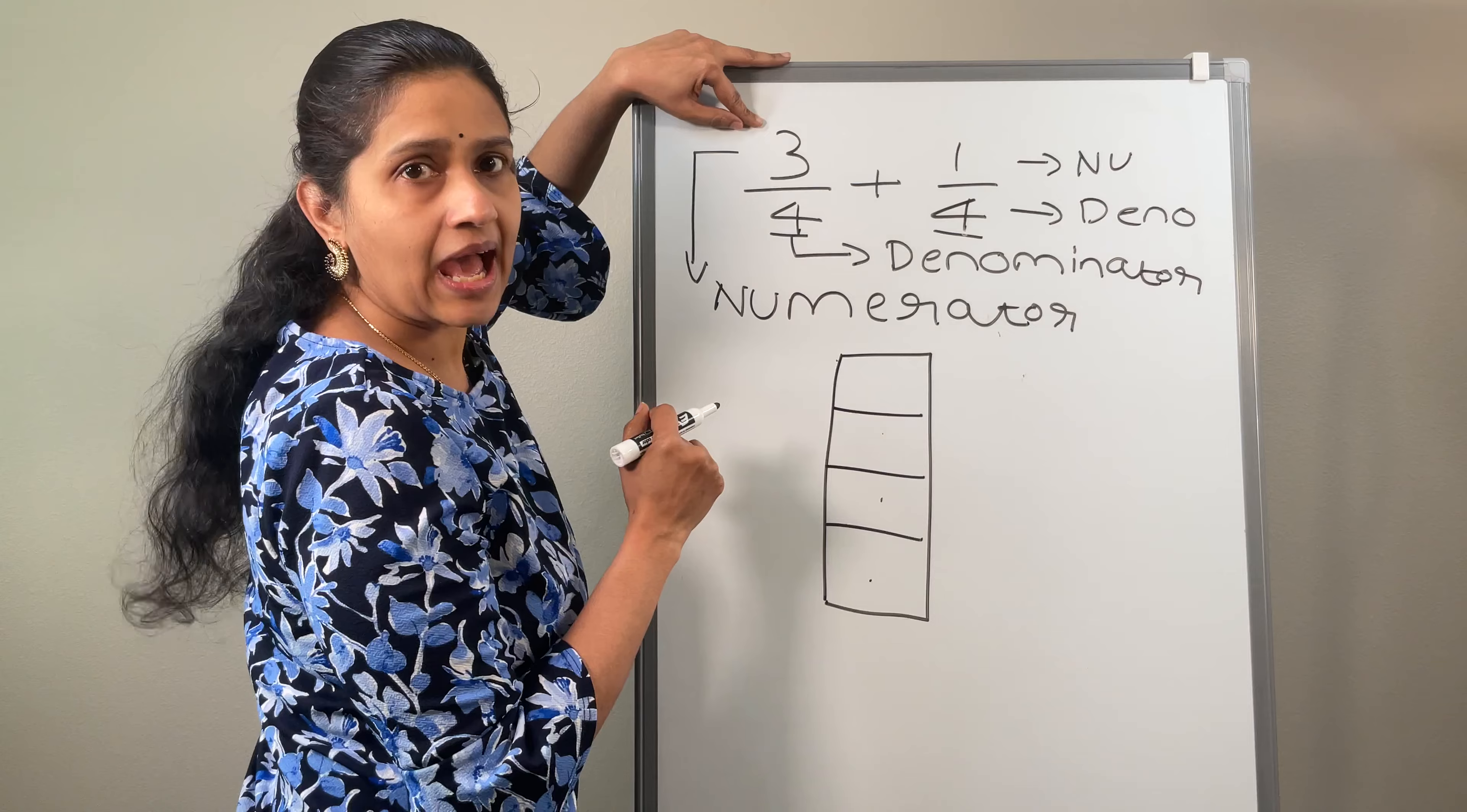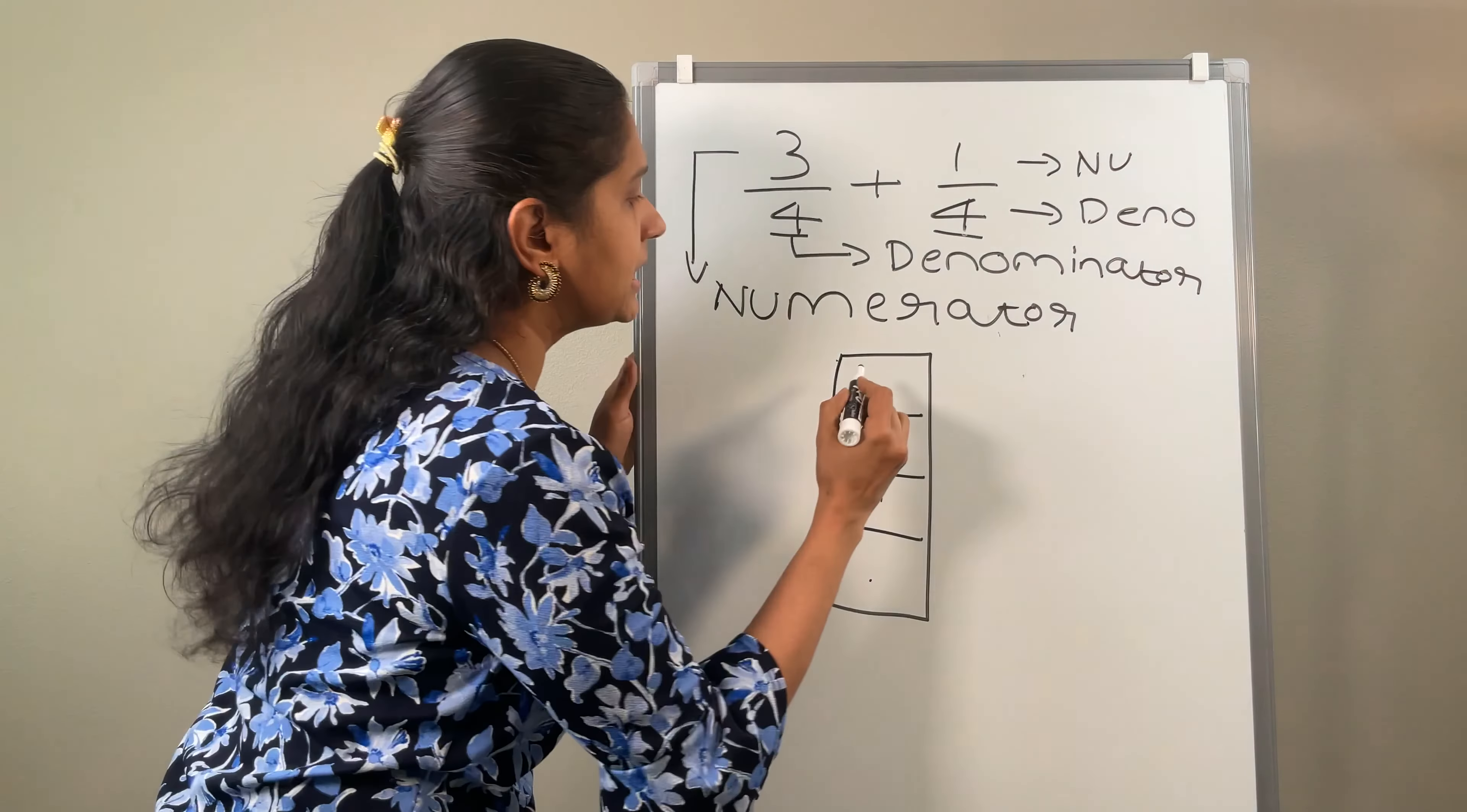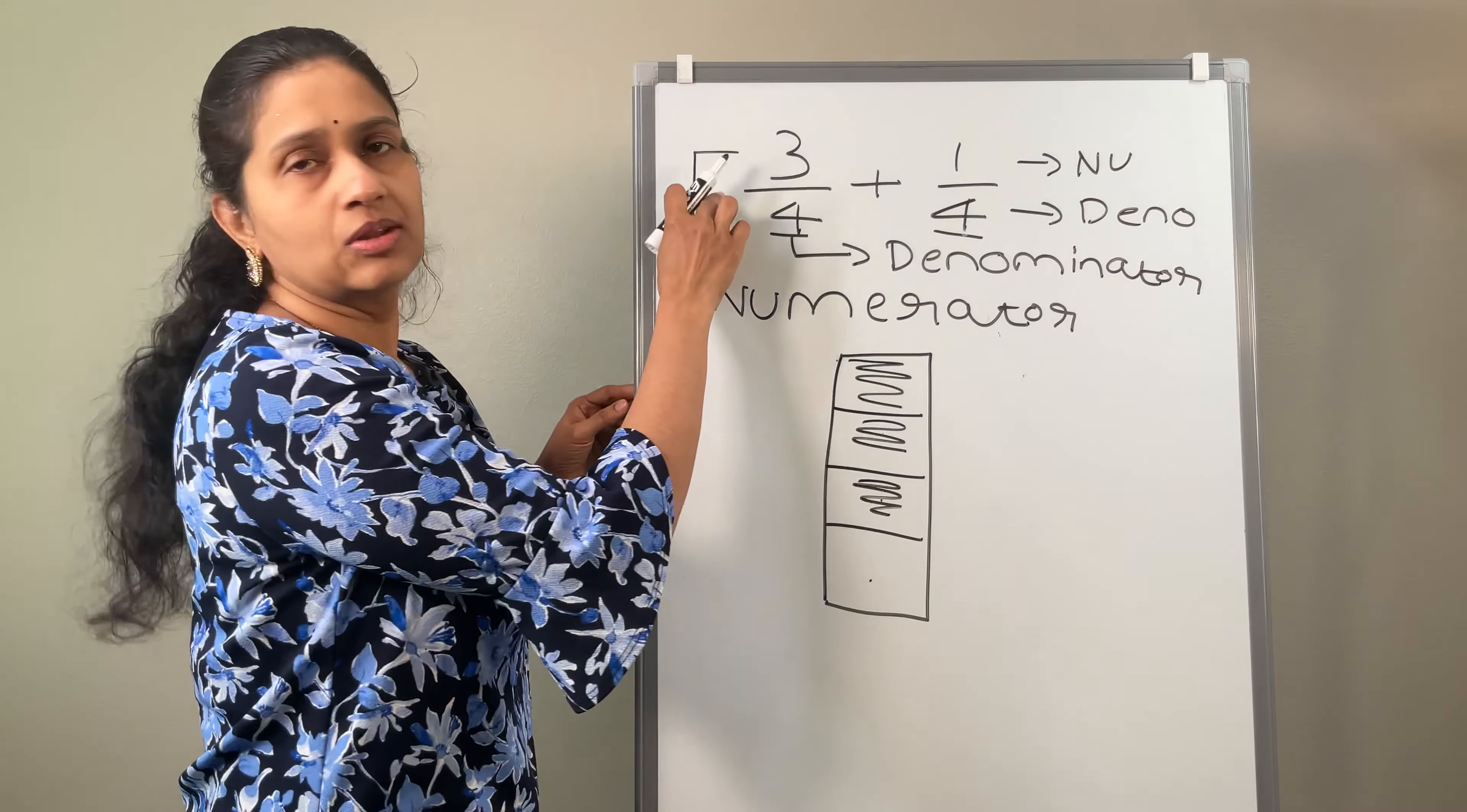Now, what does the numerator have? Numerator has a number of 3. So let me shade the 3 numbers: 1, 2, 3.